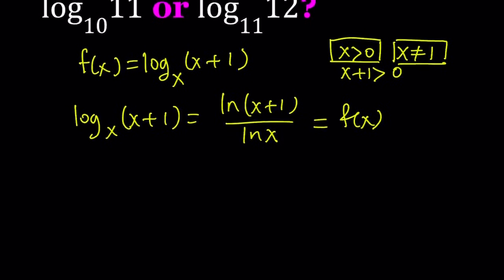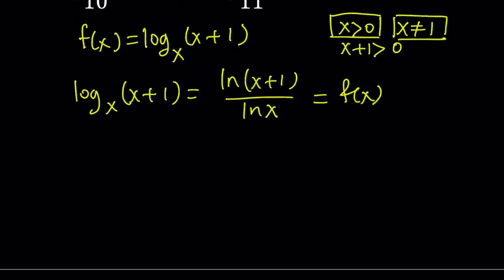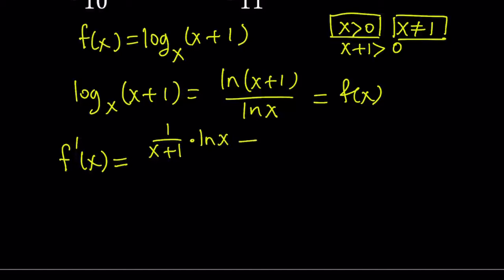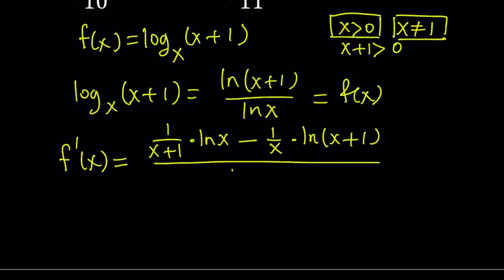Under those conditions, we can go ahead and differentiate f. To differentiate, we're going to use the quotient rule. The quotient rule is: the derivative of the top times the bottom, minus the derivative of the bottom function times the top, all divided by the bottom function squared. So it's going to look like this: 1/(x+1) times ln(x), minus 1/x times ln(x+1), all divided by [ln(x)]².